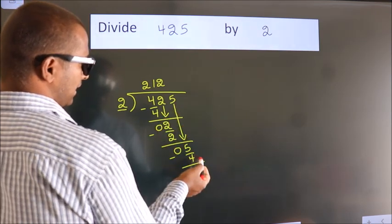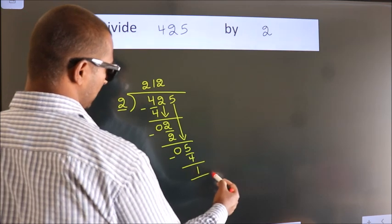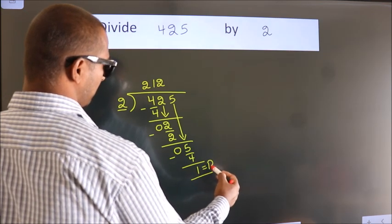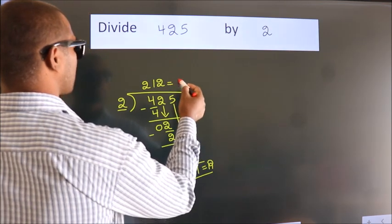No more numbers to bring it down. So we stop here. This is our remainder. This is our quotient.